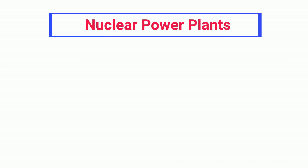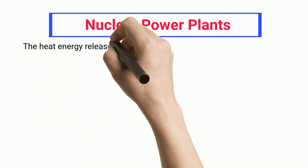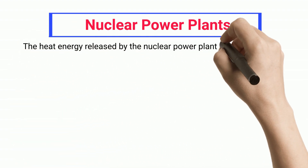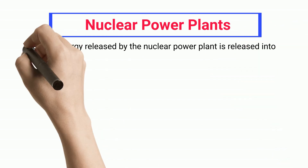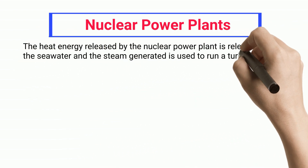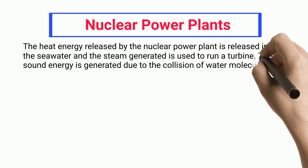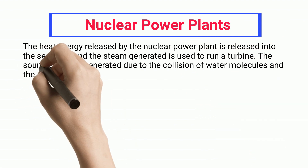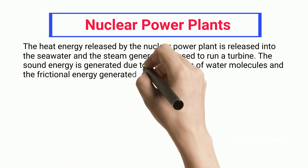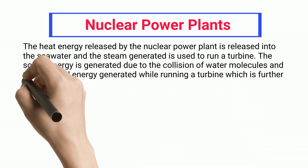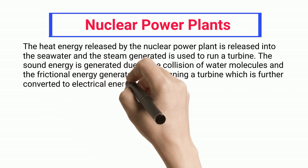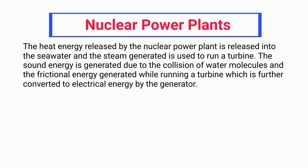Nuclear power plants. The heat energy released by the nuclear power plant is released into the seawater and the steam generated is used to run a turbine. The sound energy is generated due to the collision of water molecules and the frictional energy generated while running the turbine, which is further converted to electrical energy by the generator.